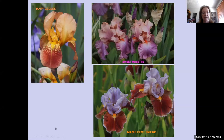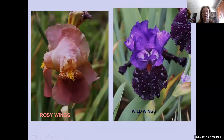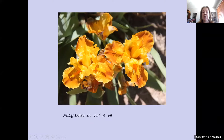Bitone is a color pattern where the flowers have standards and falls of different amounts of the same color — ordinarily the falls are darker than the standards, but they don't have to be. This is where you have Rosy Wings, which is two different shades of pink: a lighter pink in the standards and darker rose in the falls. Wild Wings by Keith Keppel has lighter purple standards and dark purple falls.